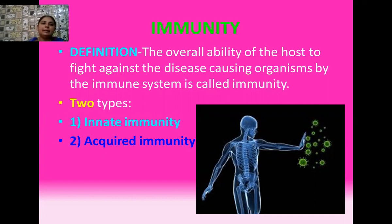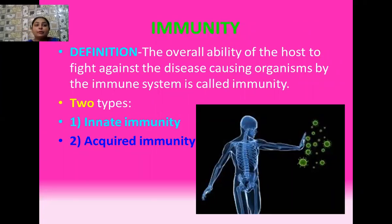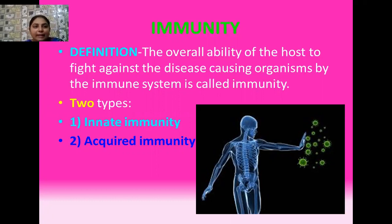Sometimes what happens? You are coming in contact with so many types of pathogens and antigens in your daily life. But you see that all of these pathogens and antigens do not cause any harm to you. Your body protects itself from the effect of these disease-causing organisms. What is present in your body for this? It is immunity. Immunity is the overall ability of the host organism to fight against disease-causing pathogens, antigens, or undesirable substances which are trying to enter into the body of the host organism. It is the overall capacity to deal with these kinds of infections.